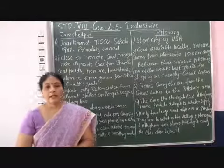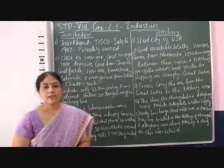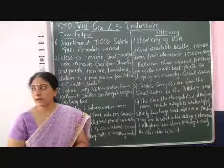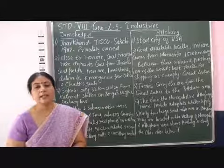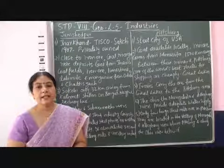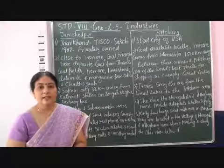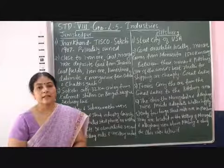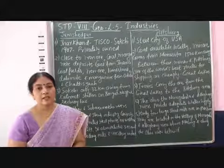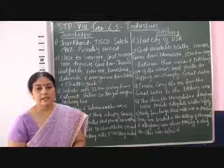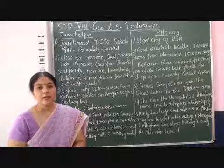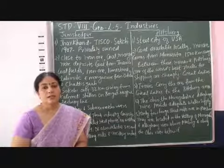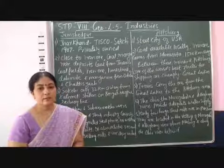In India, the first iron and steel plant was started in the year 1907 at a place called Sakchi, and this company was named as Tata Iron and Steel Company, called TISCO. This is located in a place called Jamshedpur.